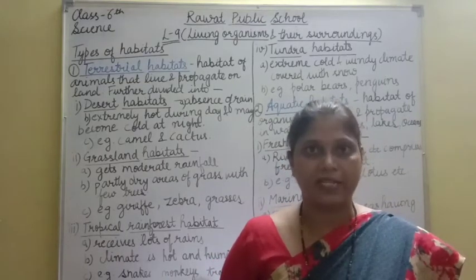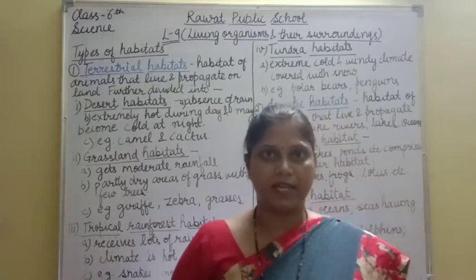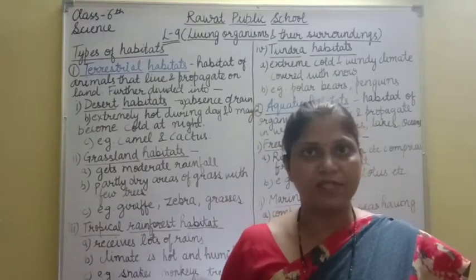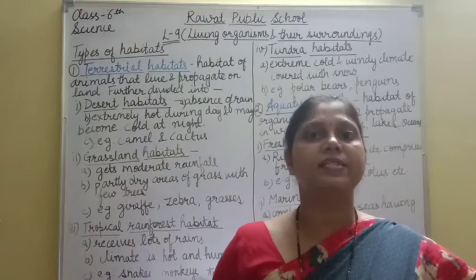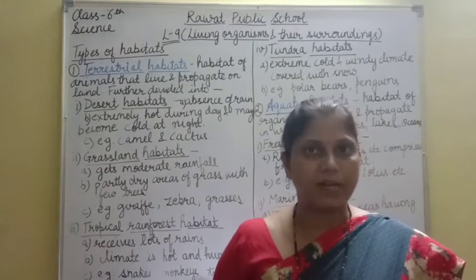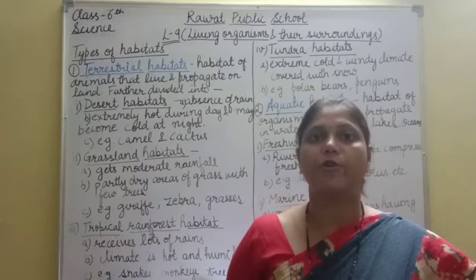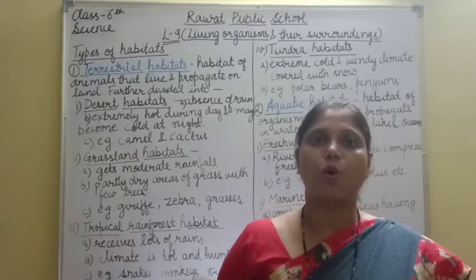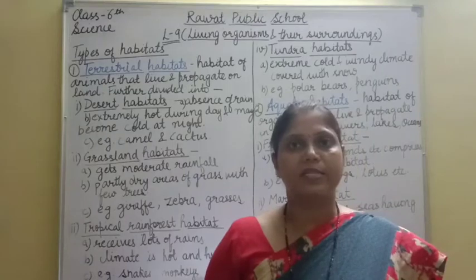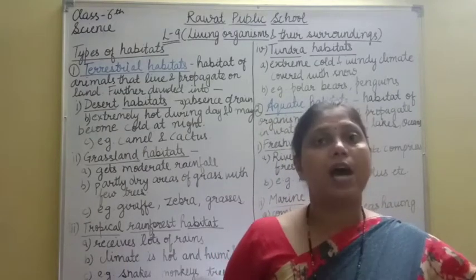जो भी जहां रहता है वो area और उसके आसपास का area — means the organism where it lives including its surroundings. Components पढ़े थे हमने — two types के components होते हैं: biotic और abiotic. Biotic comprises all the living things and abiotic comprises all the non-living things.